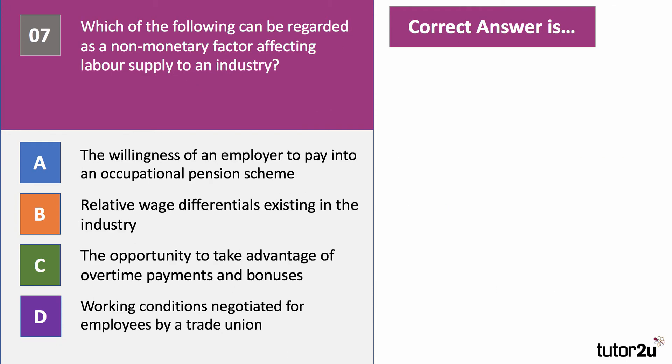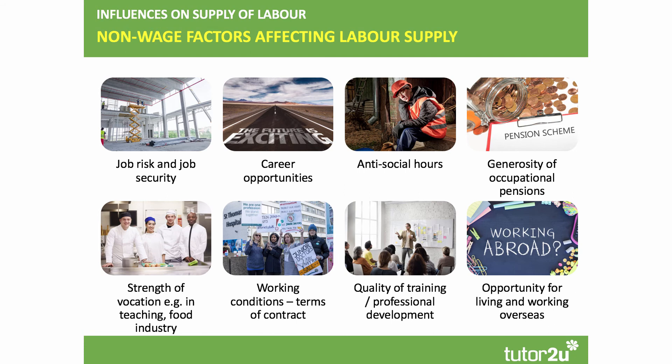Question seven: which of the following can be regarded as a non-monetary factor affecting labour supply to an industry? The correct answer is D: working conditions, hours, and health and safety negotiated for employees by a trade union. The other three options have an aspect of monetary reward. Non-wage factors include things like job risk, job security, working conditions, the extent to which workers have to work antisocial hours, and opportunities for career progression, to live and work overseas, and much else besides.